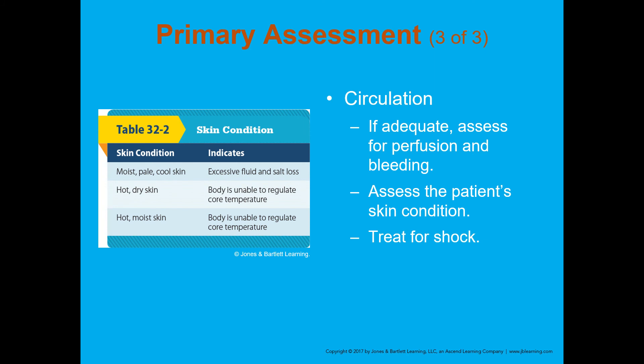For circulation, assess for perfusion and bleeding and treat for shock if necessary. Moist, pale, cool skin indicates excessive fluid and salt loss. Hot, dry skin indicates the body is unable to regulate core temperature — that's the heat stroke patient. Hot, moist skin is more like heat exhaustion — the body is still trying to regulate but hasn't fully lost the ability.